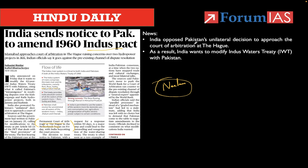That is why India has been asking to amend the 1960 Indus Pact. The Indus system of rivers comprises the main river and its tributaries — namely Ravi, Beas, Sutlej, Jhelum, and Chenab. Kindly go through the tributaries and distributaries of these rivers and their origins. The treaty provides India absolute control of all waters of the eastern rivers. I already told you, India controls the eastern flowing rivers.